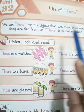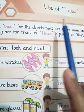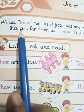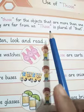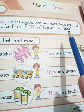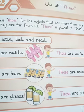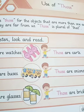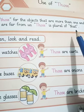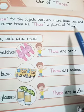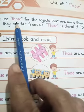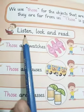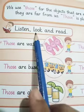Today's date and day. Unit 32: Use of 'those'. We use 'those' for objects that are more than one and they are far from us. 'Those' is the plural of 'that'. Remember: if something is near, we use 'this'; if near and plural, 'these'. If something is far and singular, we use 'that'; if far and plural, we use 'those' — T-H-O-S-E.